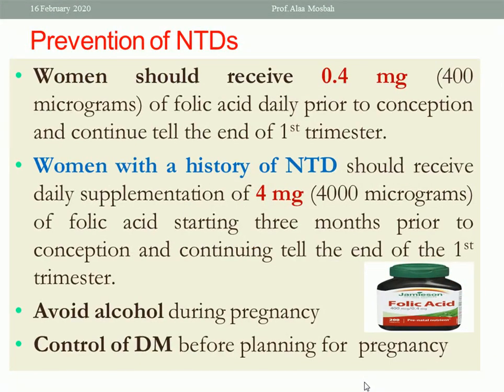To prevent neural tube defects, give folic acid 0.4 mg daily prior to conception and continue until the end of the first trimester. Also try to avoid risk factors such as alcohol during pregnancy. Try to control diabetes as much as possible before planning for pregnancy, and check hemoglobin A1c to ensure the diabetes is well controlled.